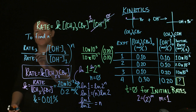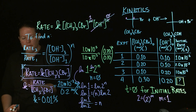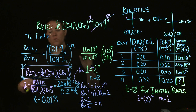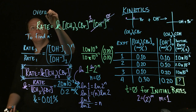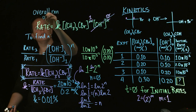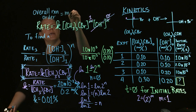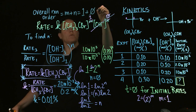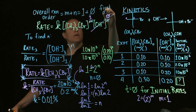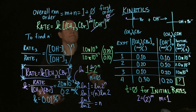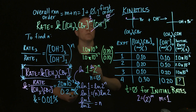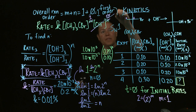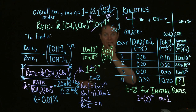Since our rate law has M equals 1 and N equals 0, the overall reaction order equals M plus N, which is 1 plus 0 equals 1. So we call this a first order equation. That makes sense — because now you know why this reaction is called SN1. The "1" talks about the fact that it's first order. Fabulous!